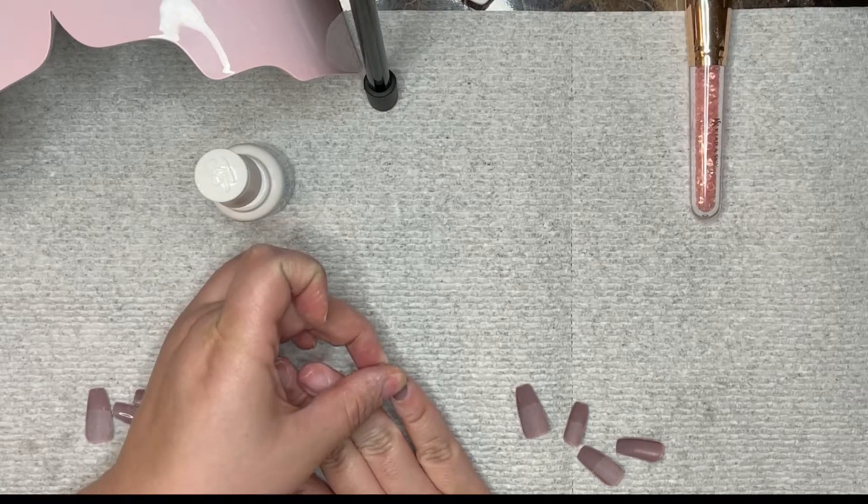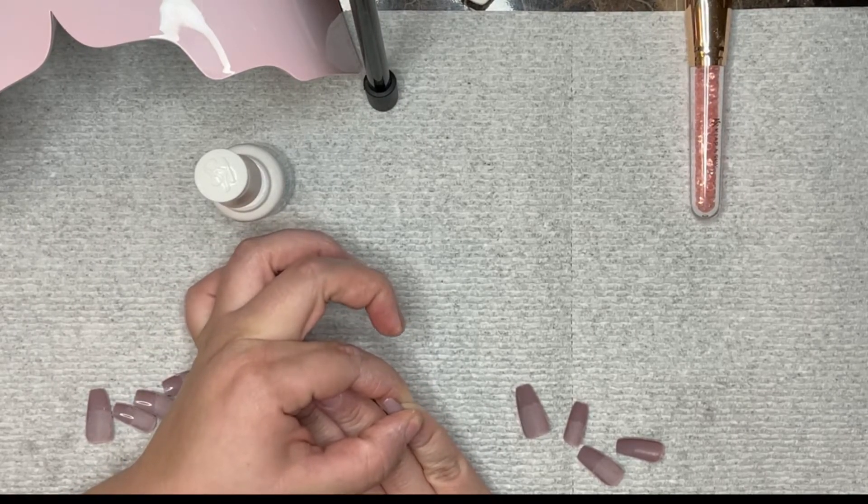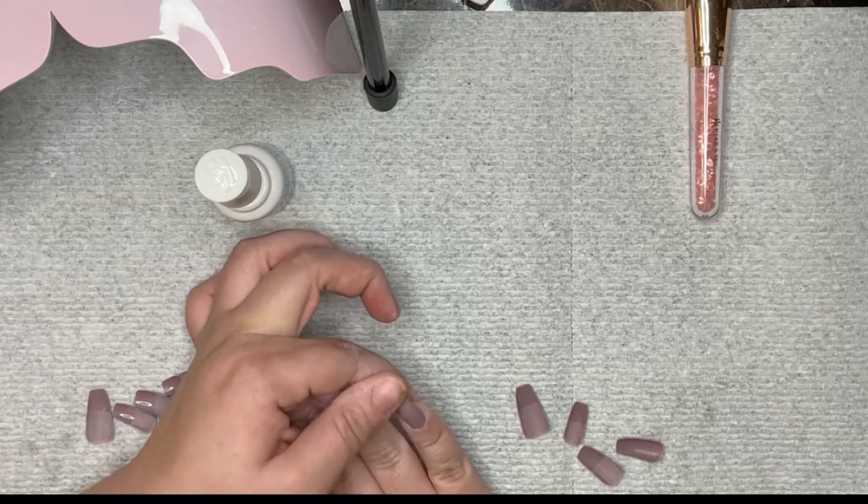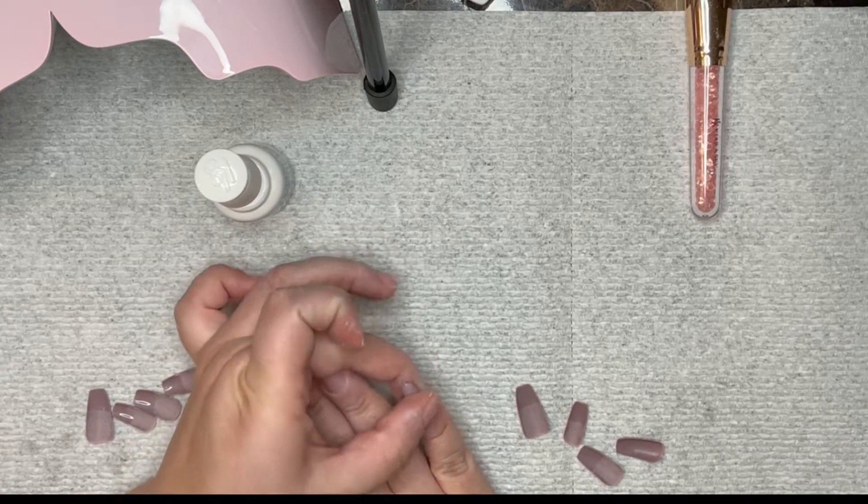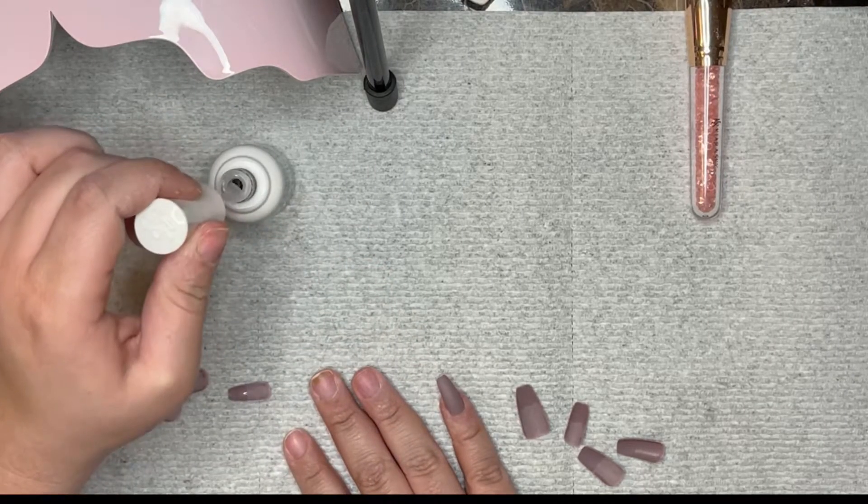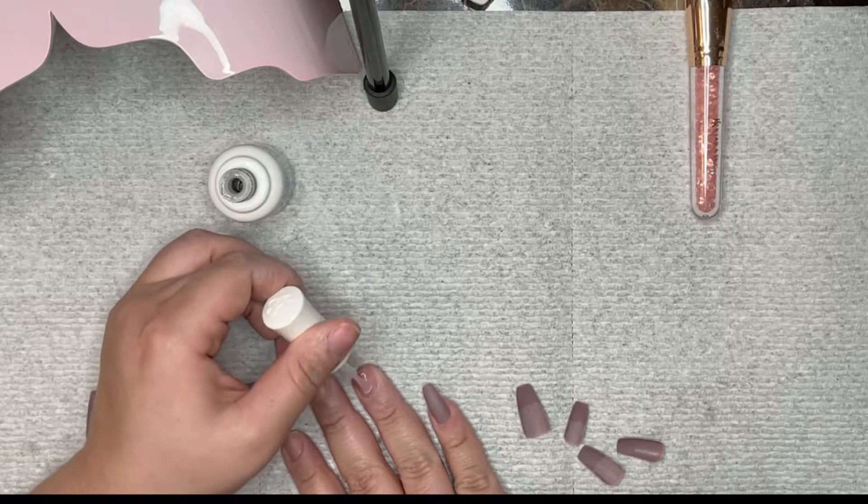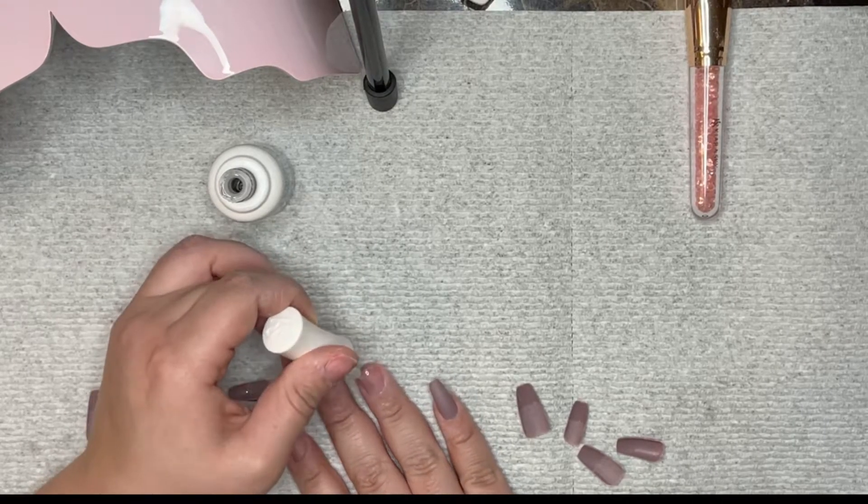And you know, nail tip glue is strong, but however, dip powder base is a lot stronger. So I decided to use the Kiara Skies Dip Powder base, which is, like I said a few seconds ago, the glue.